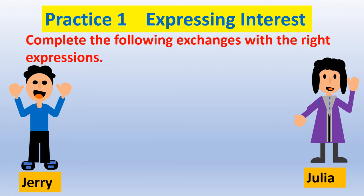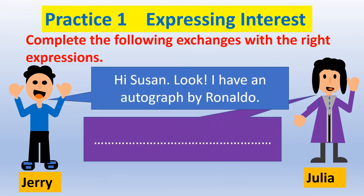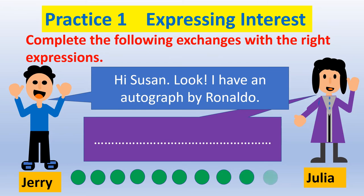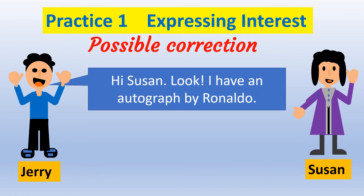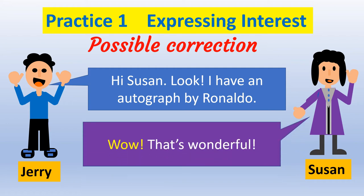Practice 1 — Expressing interest. Complete the following exchanges with the right expressions. Possible correction — Listen and practice: A: Hi Susan, look! I have an autograph by Ronaldo. B: Wow, that's wonderful!